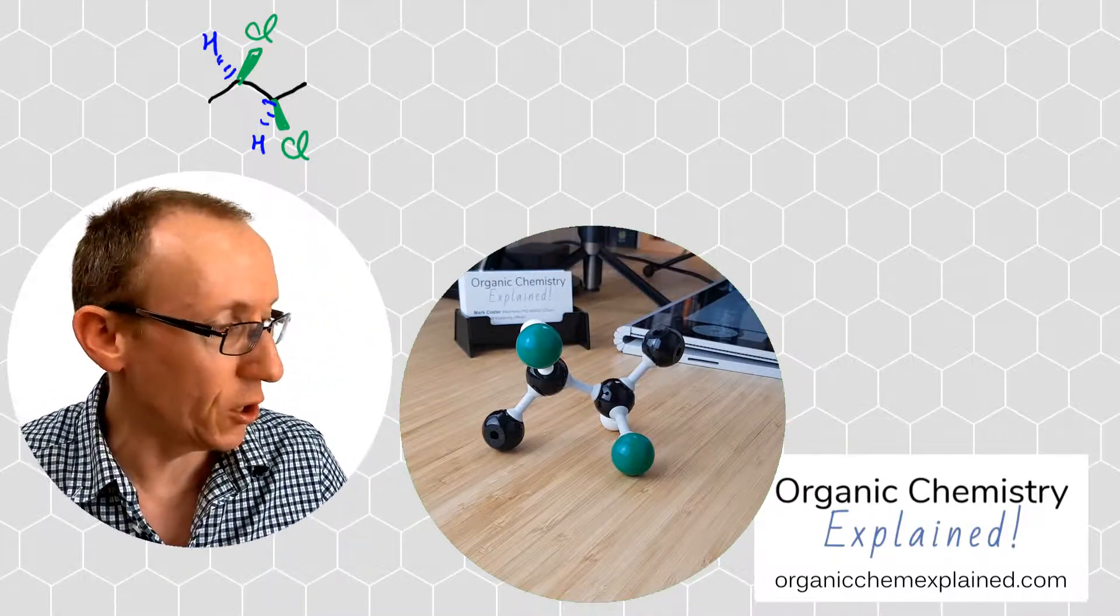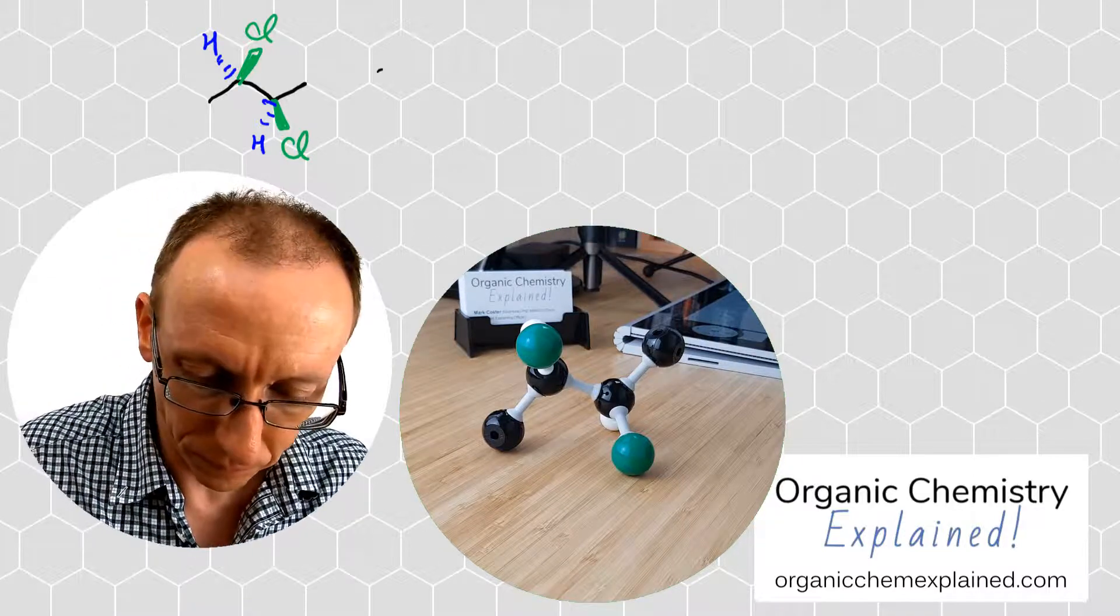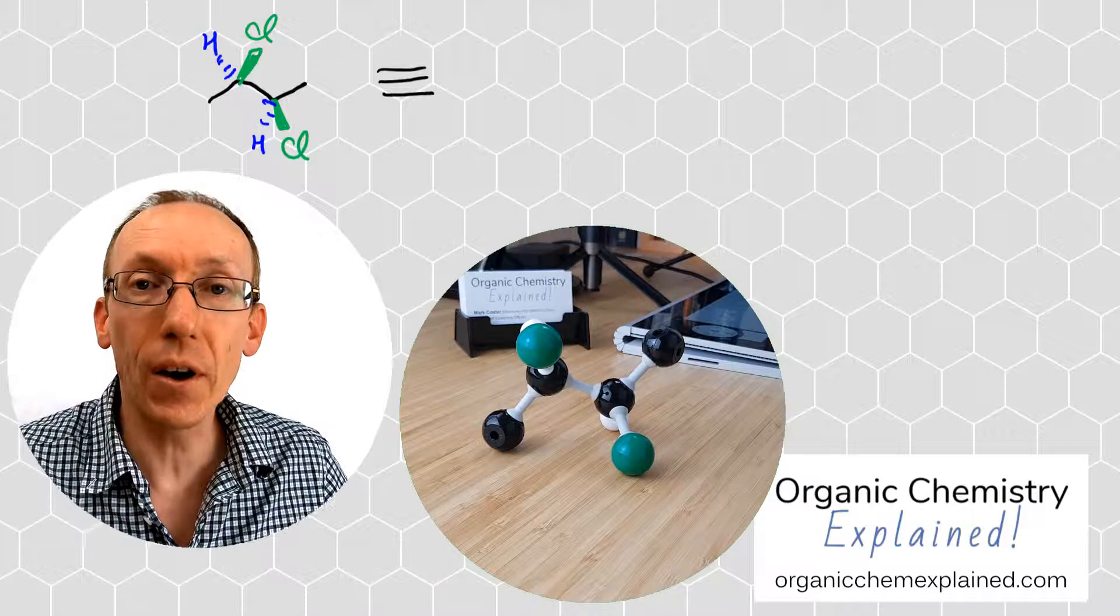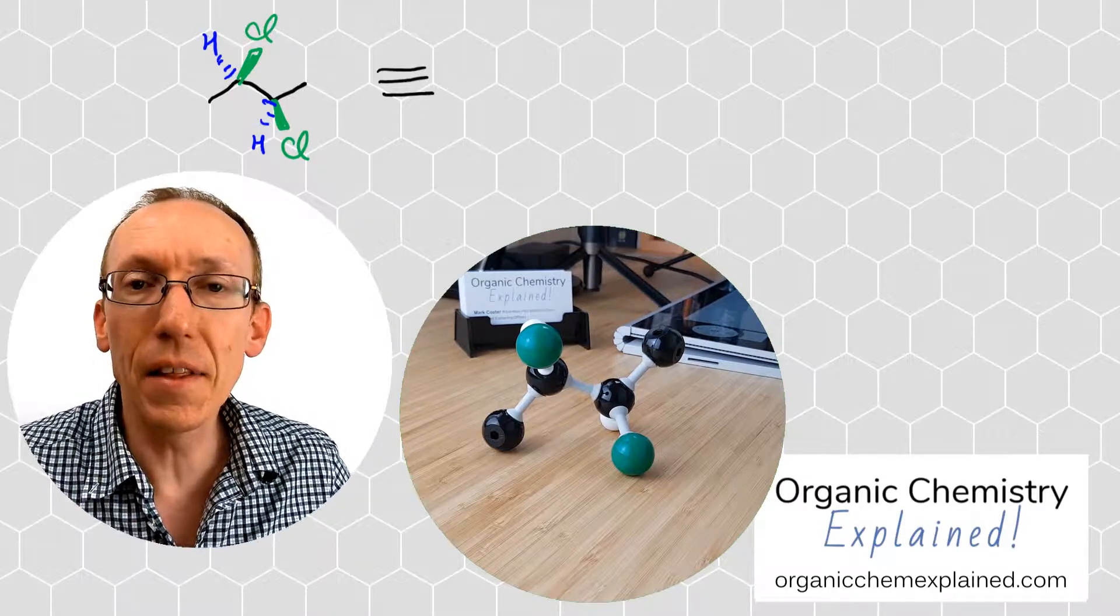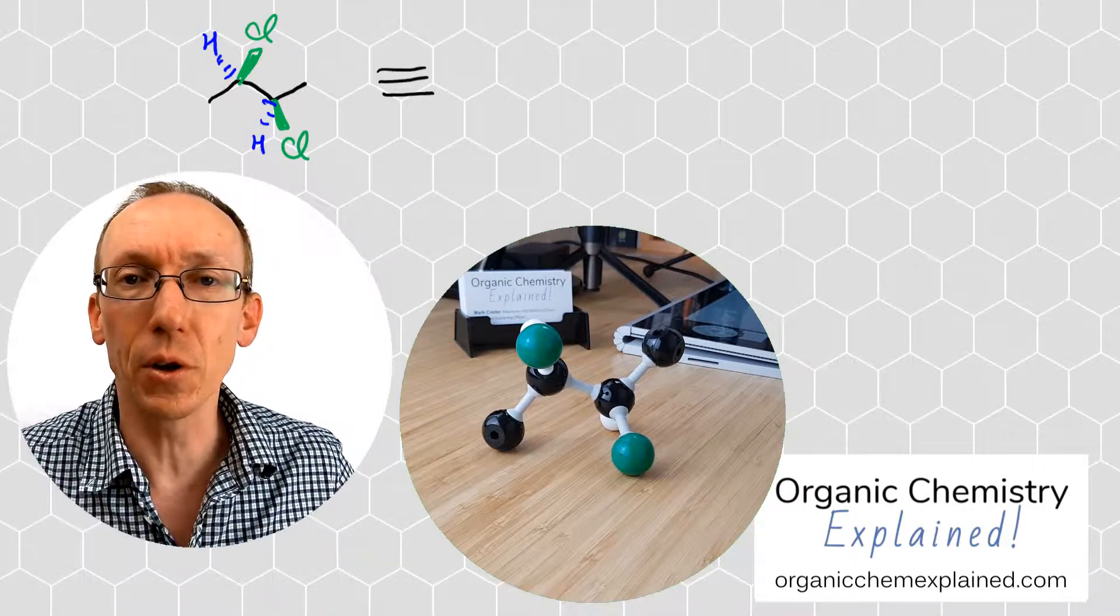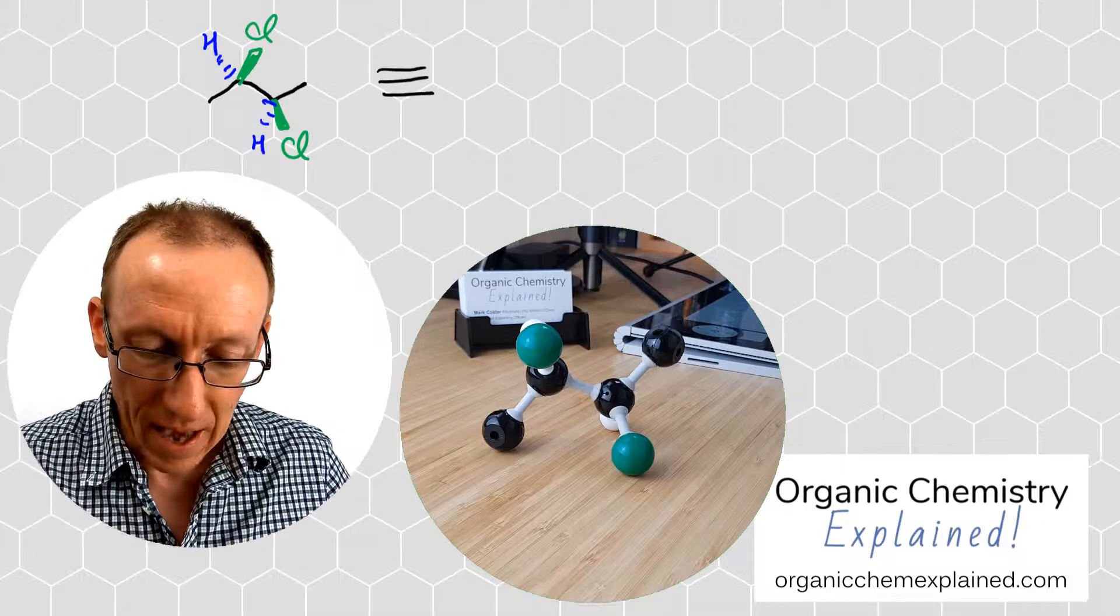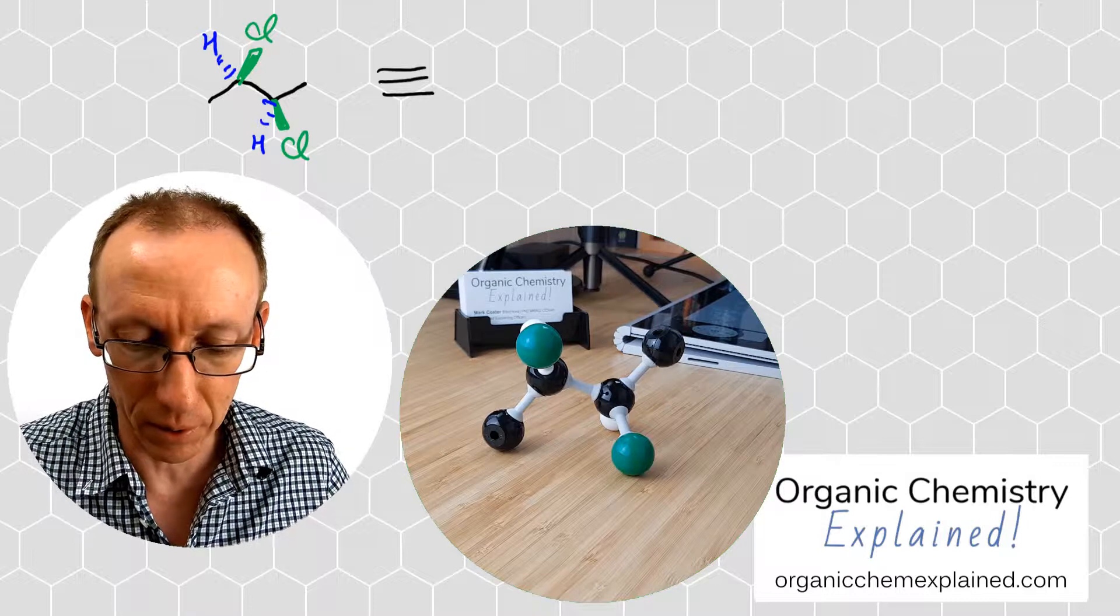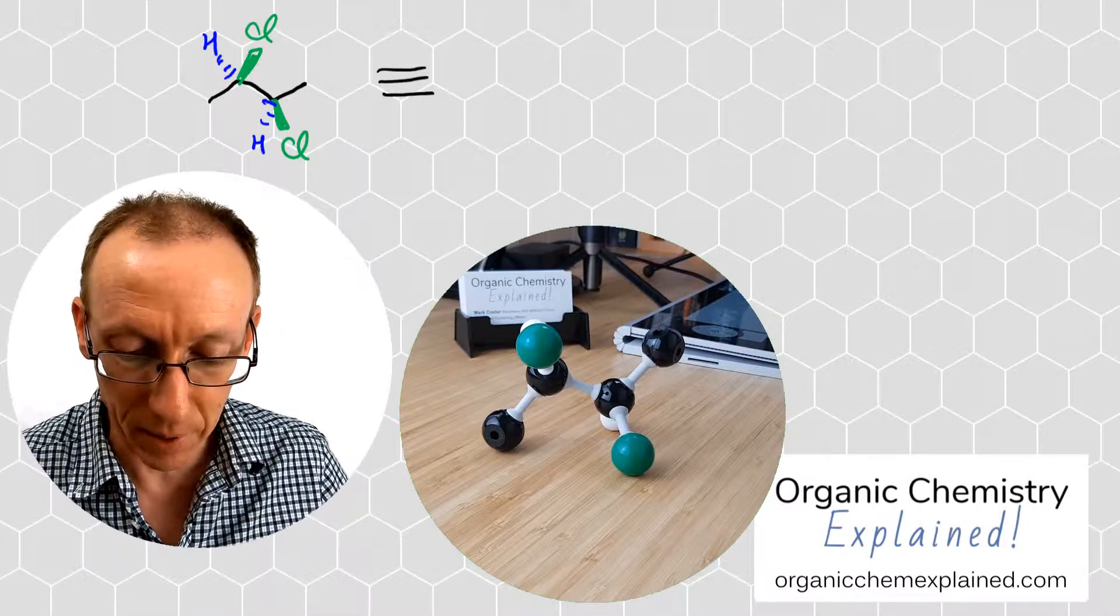We want to convert that to a Newman projection. This is just another way of drawing the same molecule and a reminder that Newman projections are used when we're drawing conformations of molecules. What I've drawn here is a staggered conformation which is the most stable conformation for a molecule or one of the most stable conformations.